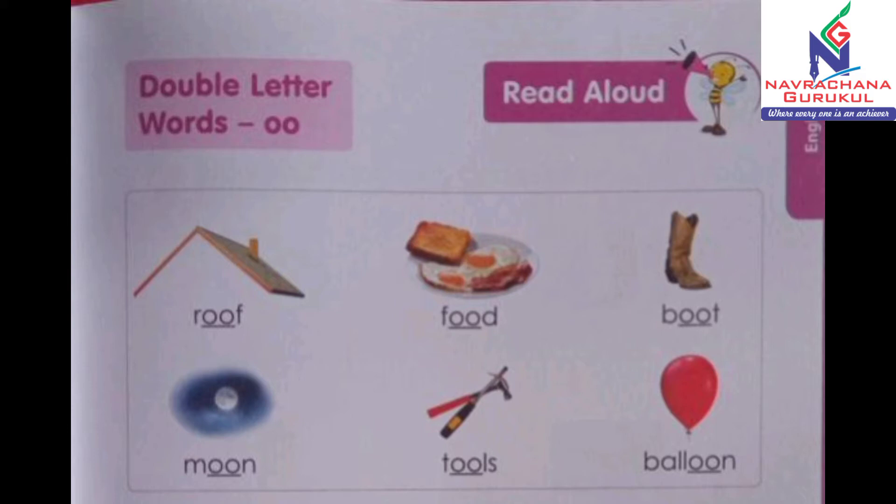First is roof — R-O-O-F, roof. Then F-O-O-D, food. Then B-O-O-T, boot. Roof, food, boot.